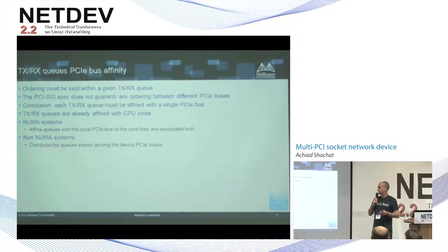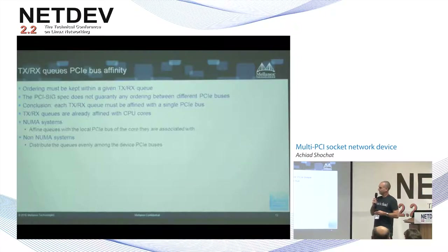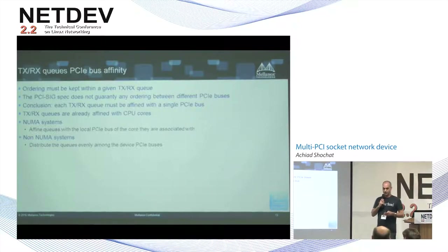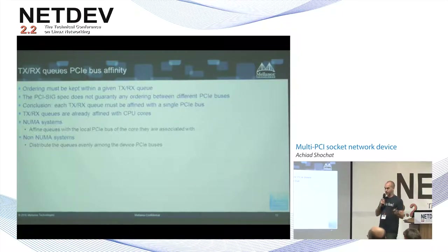It's common practice to have a TXQ and RXQ per core, usually affined per core. In the case of NUMA systems, it makes sense to affine each TXQ to the PCI bus that is local to the core which the queue is affined with — quite intuitive. In non-NUMA systems, the driver will have to distribute the queues across the PCI buses to get decent load balancing on the PCI buses.